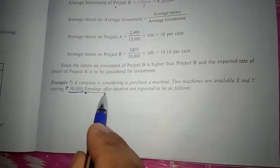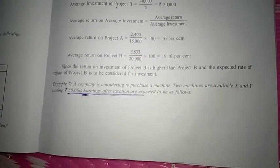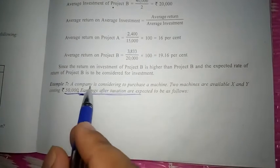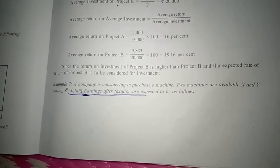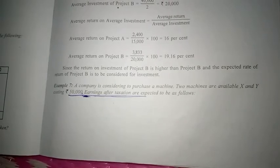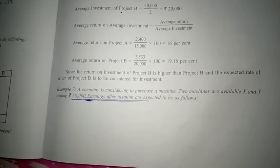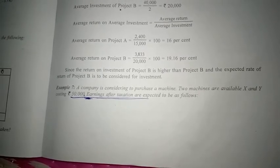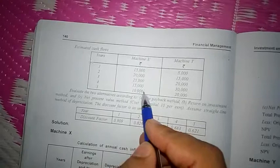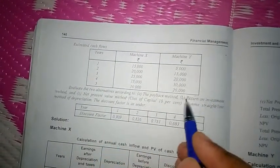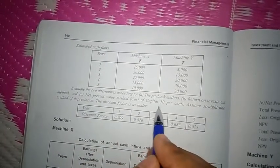They have given earnings after taxation, which is very important for the purpose of calculation of cash flow. Earnings after tax are expected to be as follows. We need to evaluate two alternatives based on the payback period method, return on investment method — that is ARR method — and the net present value method by considering 10% cost of capital, that is the discount factor.